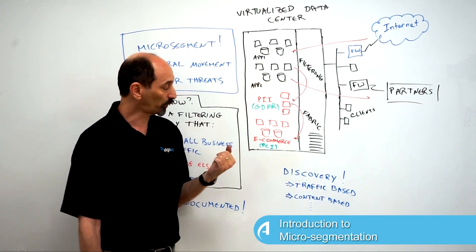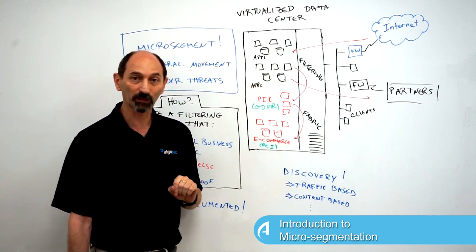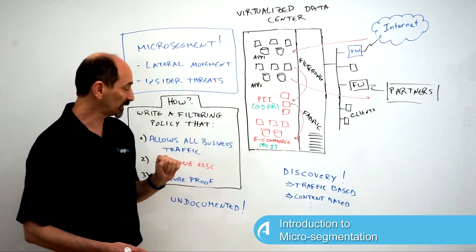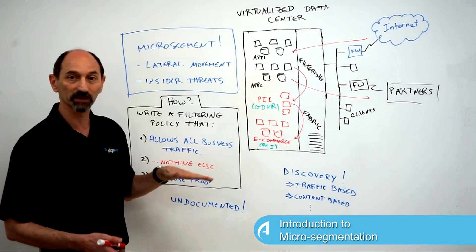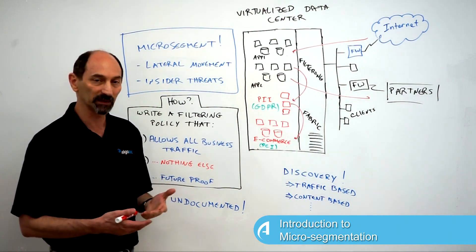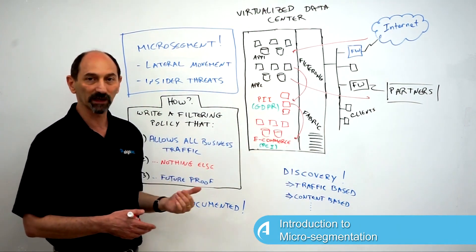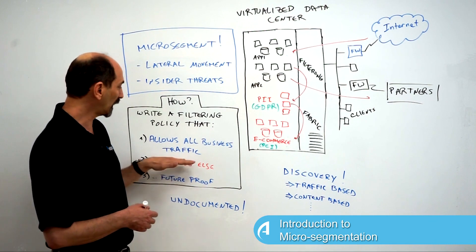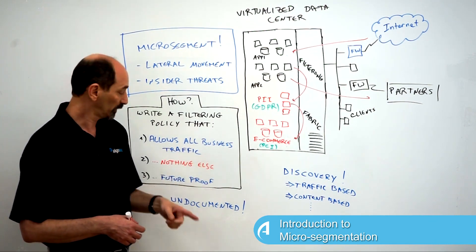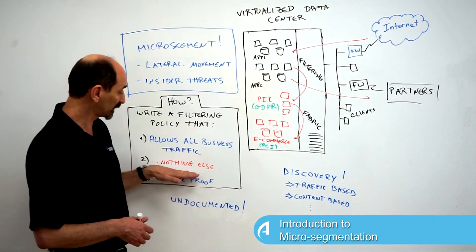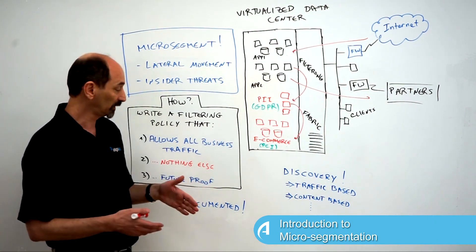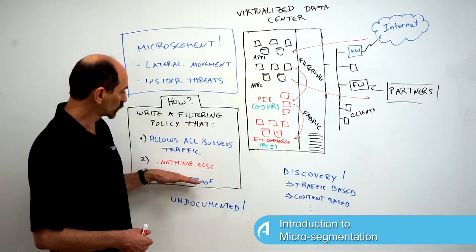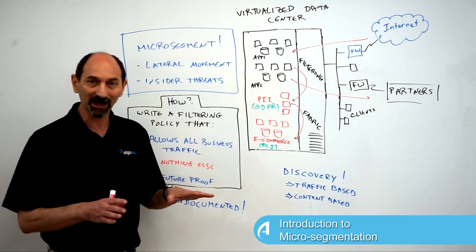The big question is how you would write this policy — what should be the rules that you place in there. Your goals in writing this policy are: first, you want those rules to allow all business traffic. The last thing you want is for your policy to break necessary business communication and cause some application to stop functioning. However, you also need to ensure that nothing else is allowed. If you allow all business traffic but by default allow everything else too, you've really accomplished nothing. You have to ensure that the default is to deny everything else.